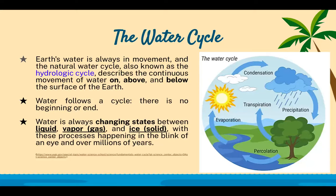Earth's water is always in movement. The natural water cycle, also known as the hydrologic cycle, describes the continuous movement of water on, above, and below the surface of the Earth. Water follows a cycle — there is no beginning or end. Water is always changing states between liquid, vapor (another word for gas), and ice (a solid), with these processes happening in the blink of an eye and over millions of years.